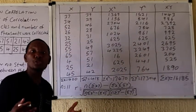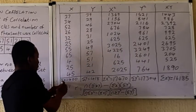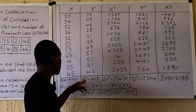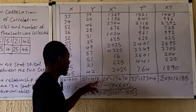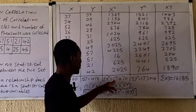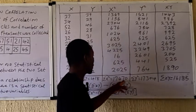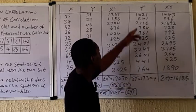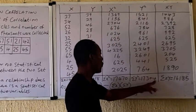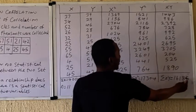Once you have all columns filled, look for the sums. The sum of X is 400. The sum of Y is 418. The sum of X² is 17,470. The sum of Y² is 17,304. The sum of XY is 16,185.